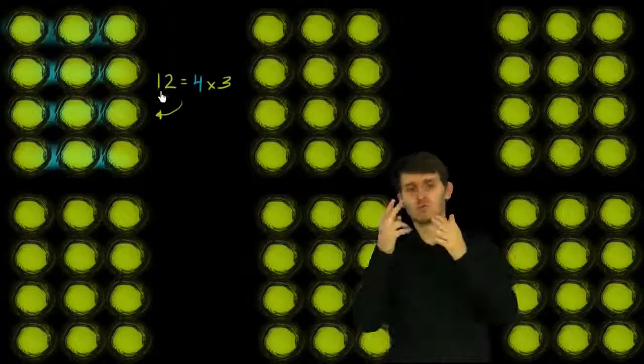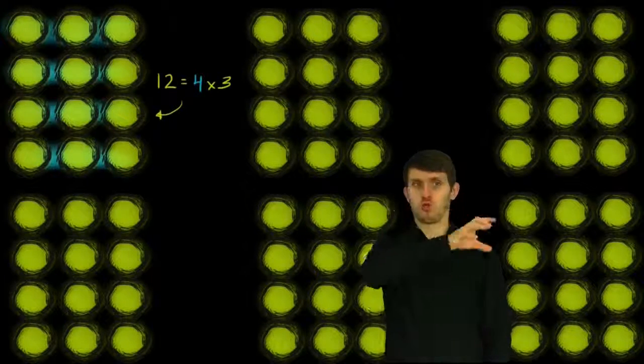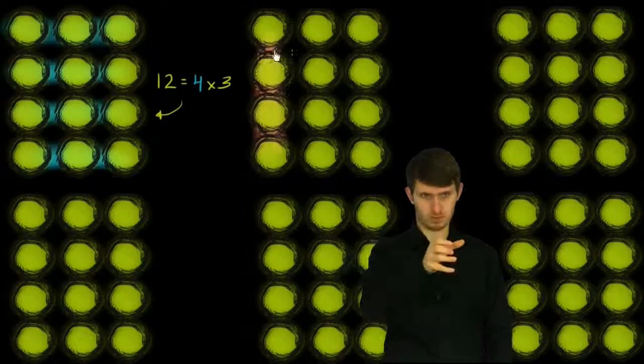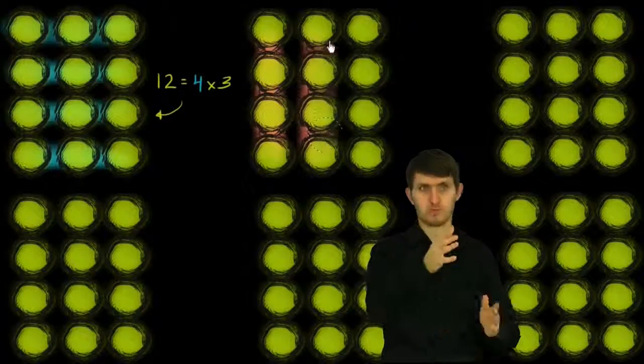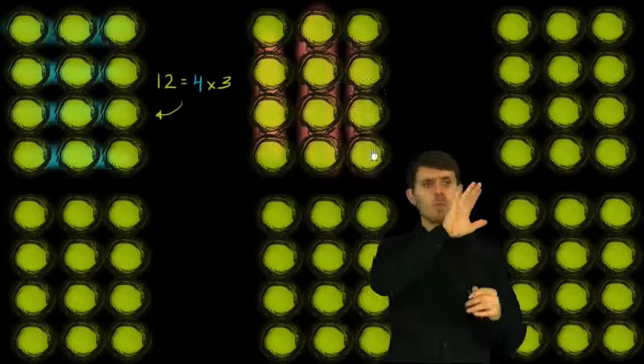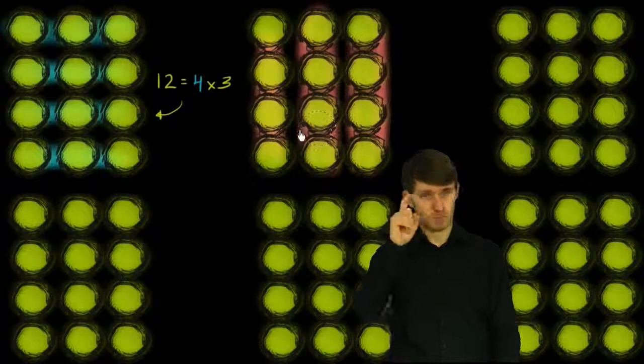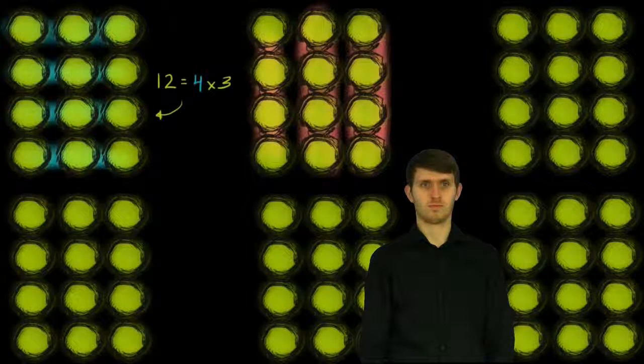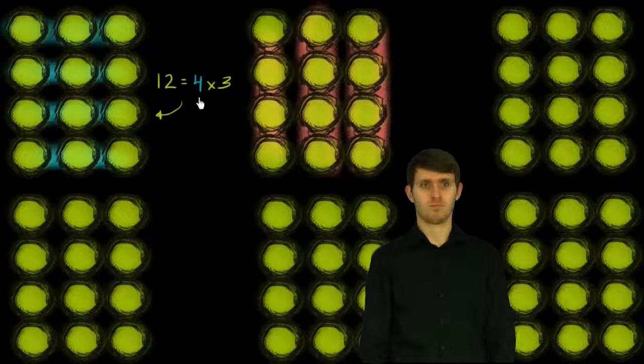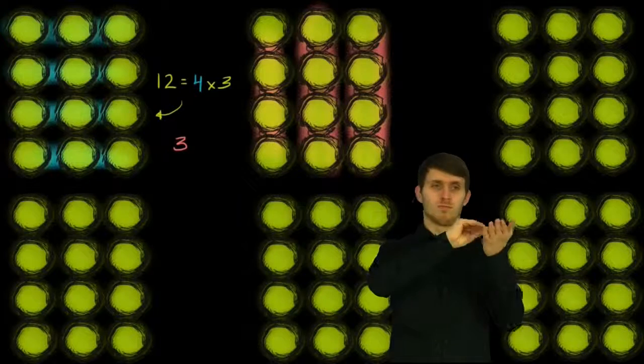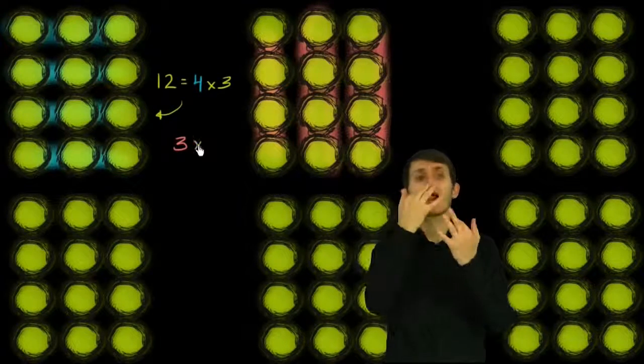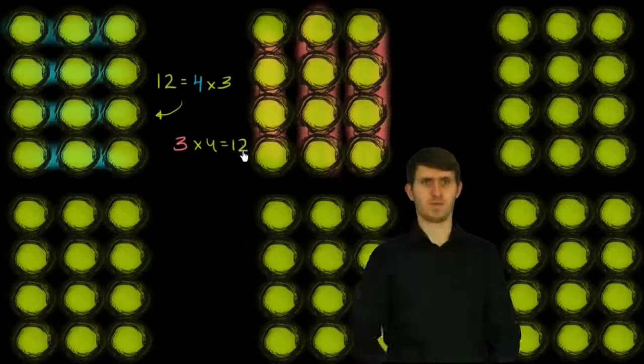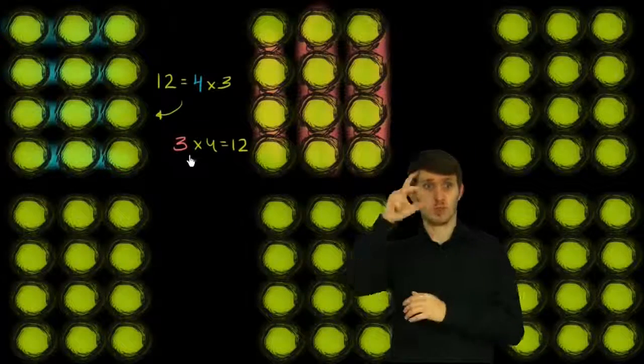But that's not the only way we can get to 12. We could also view it as 3 groups of 4. We could have 1 group of 4, 2 groups of 4, 3 groups of 4. So now we could view 12 as being 3 groups of 4, or we can say that 3 times 4 is equal to 12. Whether we're doing 4 times 3 or 3 times 4, they're both going to be equal to 12.